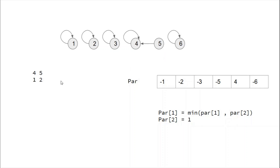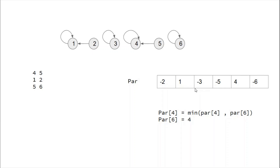The next input is 1 and 2 — merge those two sets. We make 1 the parent, so 2 points to 1. We update parent[1] to be minimum of parent[1] and parent[2], which is minimum of minus 1 and minus 2, giving minus 2. So at index 1 we have minus 2, indicating the highest hitting power in this set is 2. At index 2 we have 1, pointing to the parent.